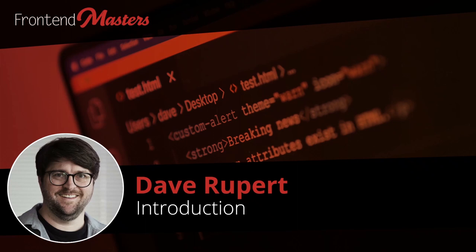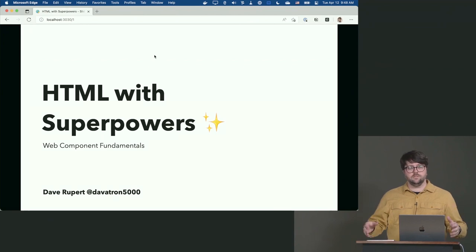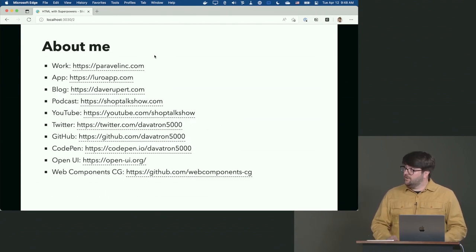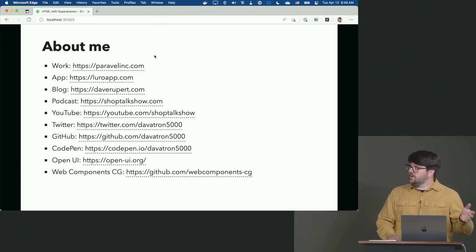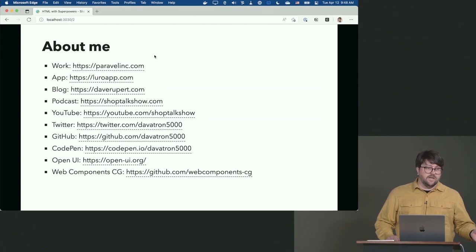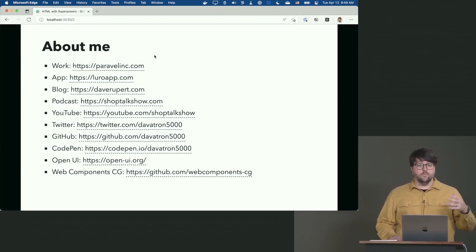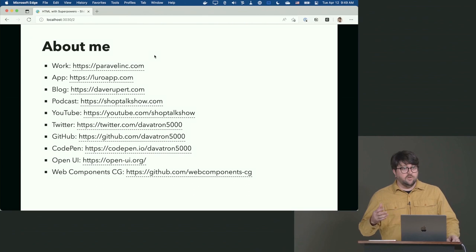My talk is called HTML with Superpowers. It's going to be an intro-to-intermediate look at web components, and I'm Dave Rupert. I work at a company called Paravel, based in Austin, Texas. I've been working on an app called Luro for about the last six months, I have a blog with an RSS feed, and a podcast with Chris Coyer — formerly of CSS Tricks — called Shop Talk Show. We have a YouTube at youtube.com/shoptalkshow.